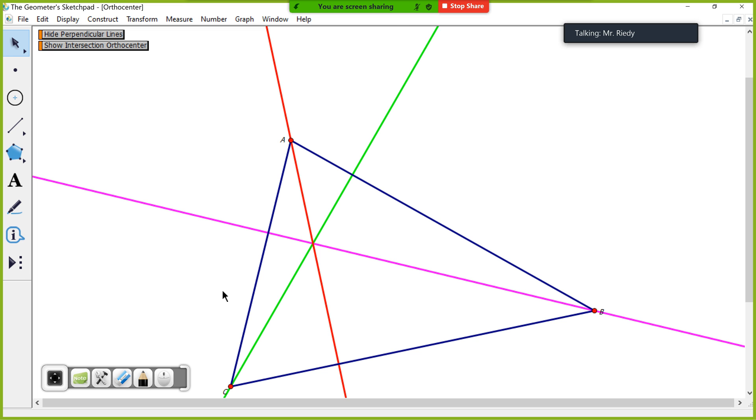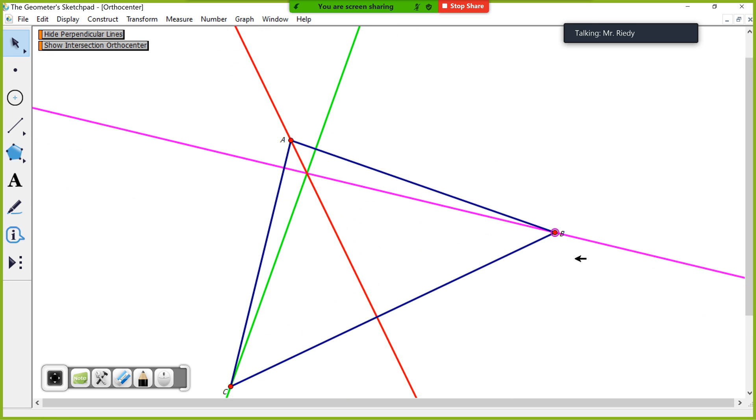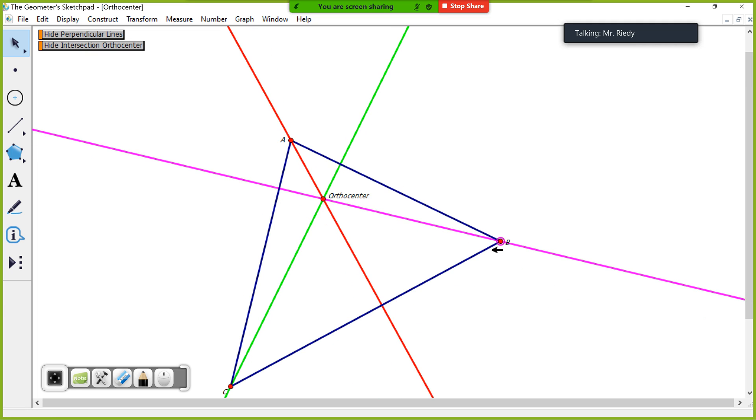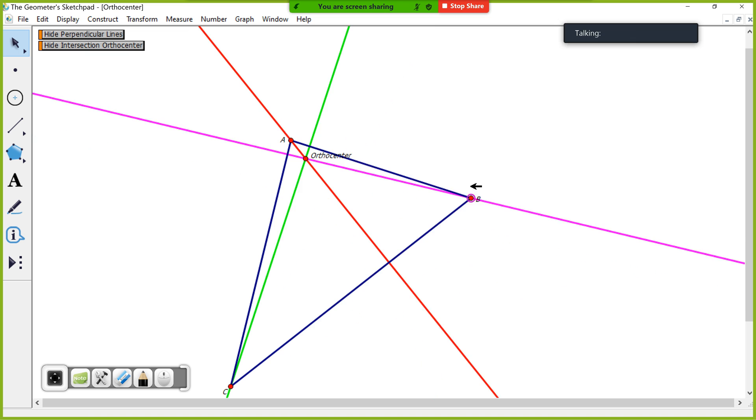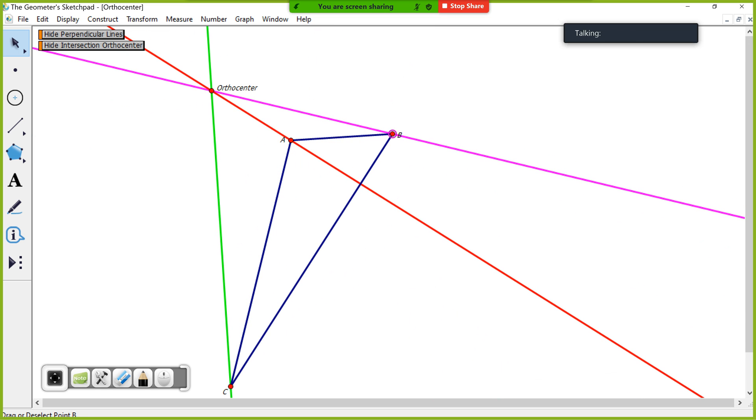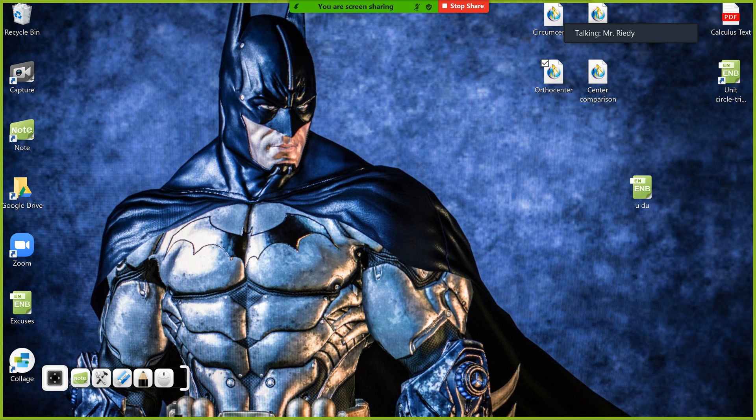And it's similar to what we did before if I grab this and drag it around you can see that the orthocenter can be inside the triangle, it can be on the triangle, or it can be outside the triangle. And we'll delve into that a little bit more later on. More importantly, however, is keeping track of this scenario.